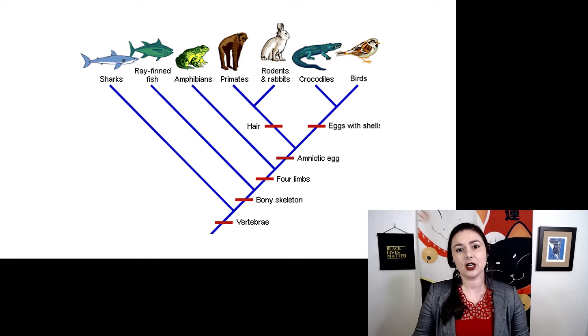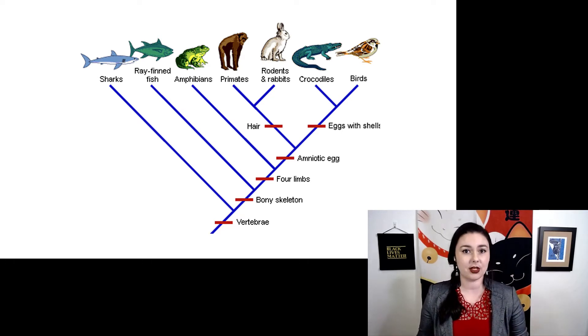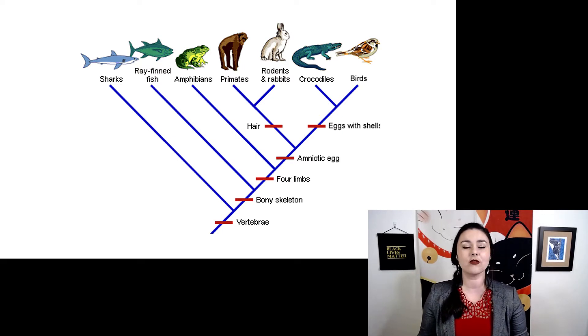What we're talking about here is once we have an idea of the pattern of how species are related, we can start to put interesting things on the tree. Here we've mapped on different important adaptations and when they happen. So hair, both primates and rodents have hair. So that is a synapomorphy or a shared derived trait of all mammals. Eggs with shells that happen before birds and crocodiles separated. So that's why we put it on that branch of the tree. And this is just a nice way to understand how old different traits are and when evolution happens.